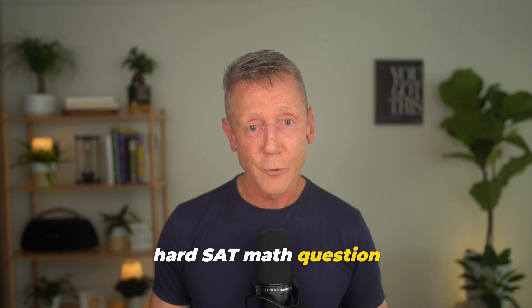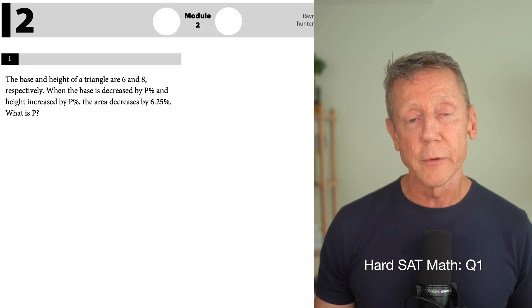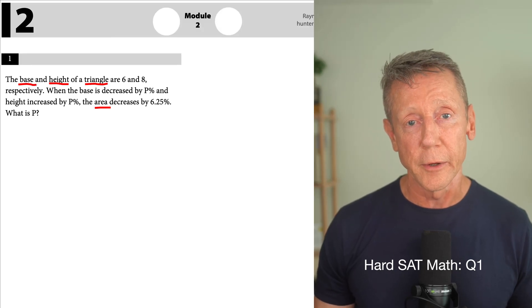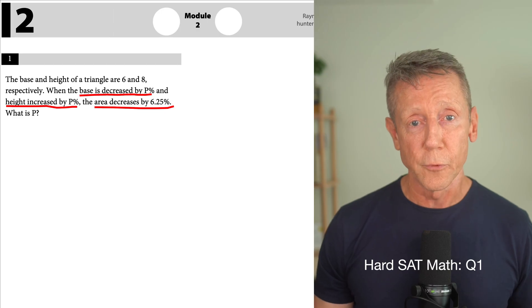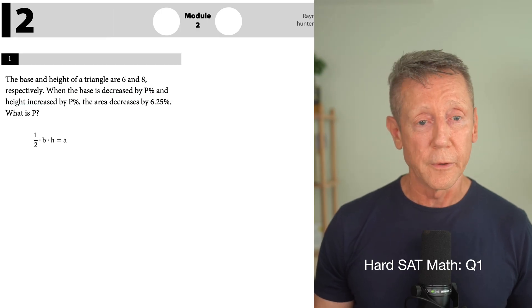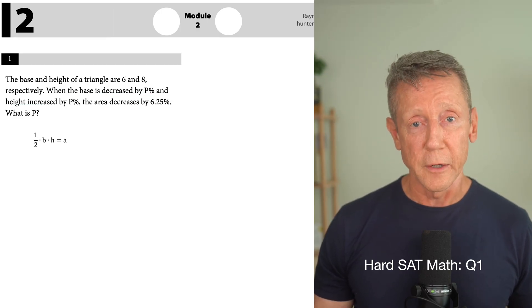As I read through this problem, I see we have a triangle with a base, a height, and an area. And then I see that all three of those things - base, height, and area - are going to be changed by percentages. So I think we should start by writing the formula for the area of a triangle. And there it is: one half base times height is area.